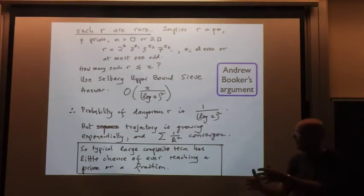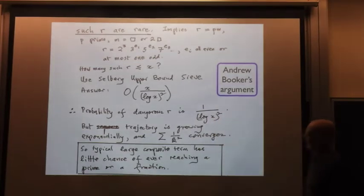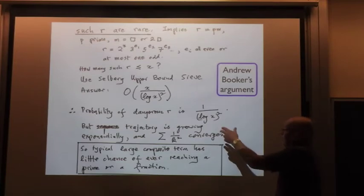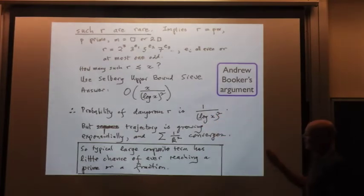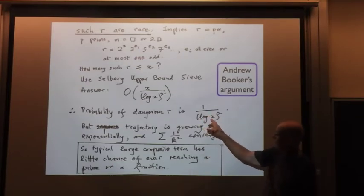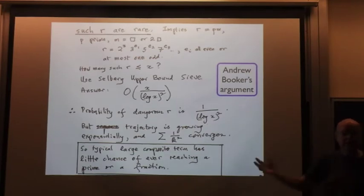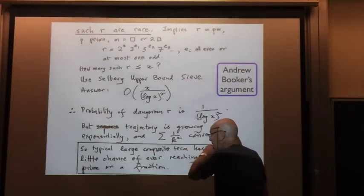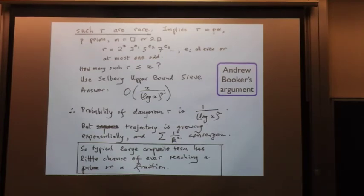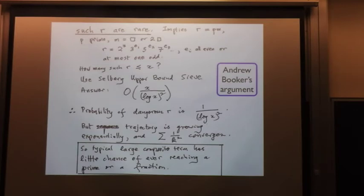And now, one more step: the chance of being a dangerous number at that step was one over log²x. The sequence is essentially doubling each time, so we're summing the probability — tossing a coin each time with a chance of one over log²x of being bad. But because the sum of 1/k² converges, this is very unlikely. So the conclusion is: a typical large composite term has a zero chance of ever reaching a prime or a fraction. It's a convincing heuristic argument that most numbers have a trajectory which is infinite. So the answer is, 270 just happened to be the first one.